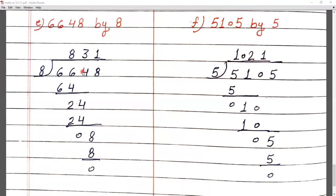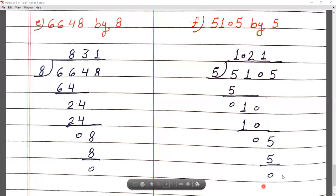Question F: 5105 by 5, meaning 5105 divided by 5. First digit 5 — 5 ones are 5, minus 5 is 0. Next digit 1 is smaller than 5, so write 0 and bring down next digit 0, making 10. 5 twos are 10. 10 minus 10 is 0. Bring down next digit 5. 5 ones are 5. 5 minus 5 is 0. The answer is 1021.